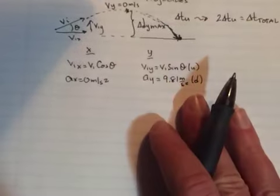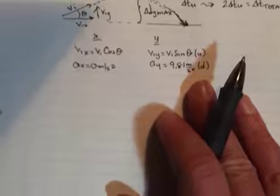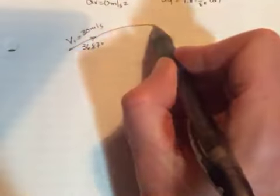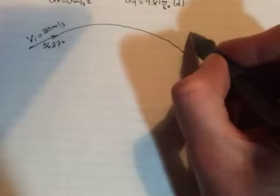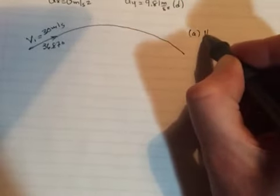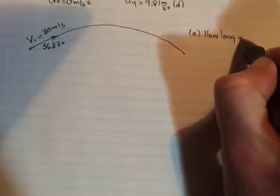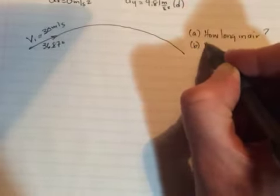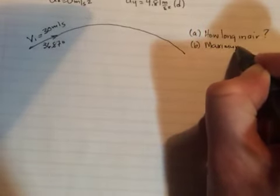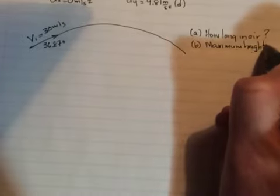So if we were to do an example here, let's say I do VI is 30 meters per second at an angle of 36.87 degrees. So you're kicking like a soccer ball or a football. It's going up. It's coming back down. And the three things we would ask you to find would be how long is it in the air? How high did it go or maximum height reached? And how far away did it land?